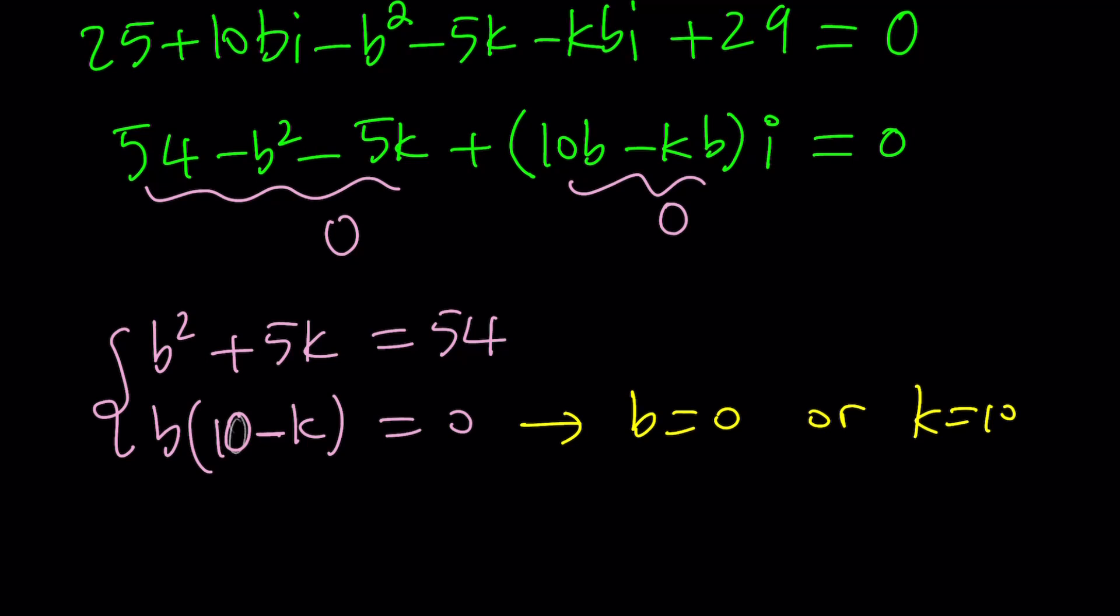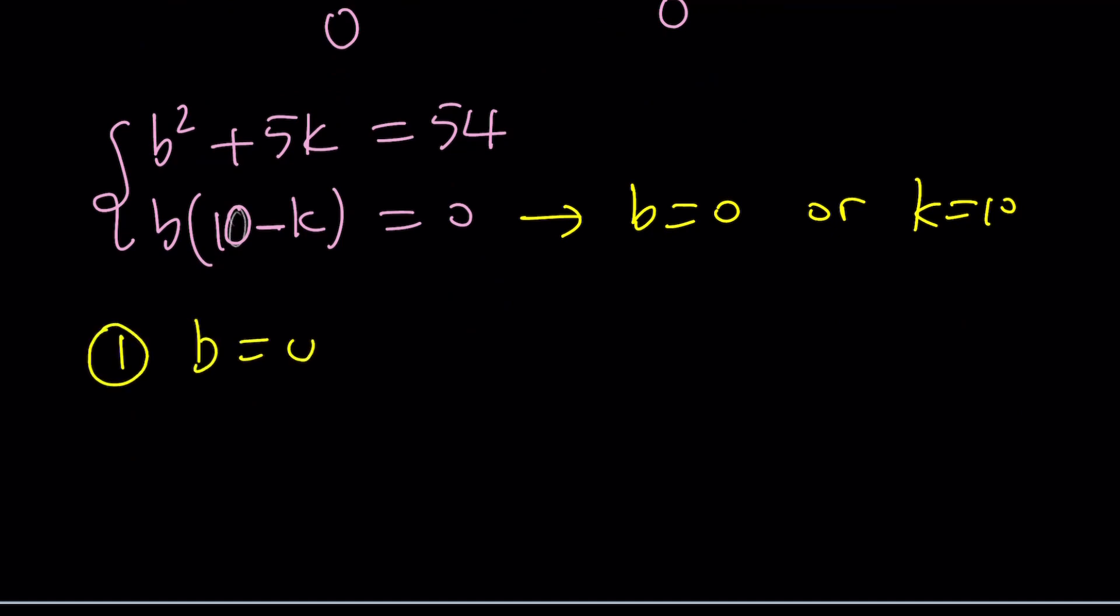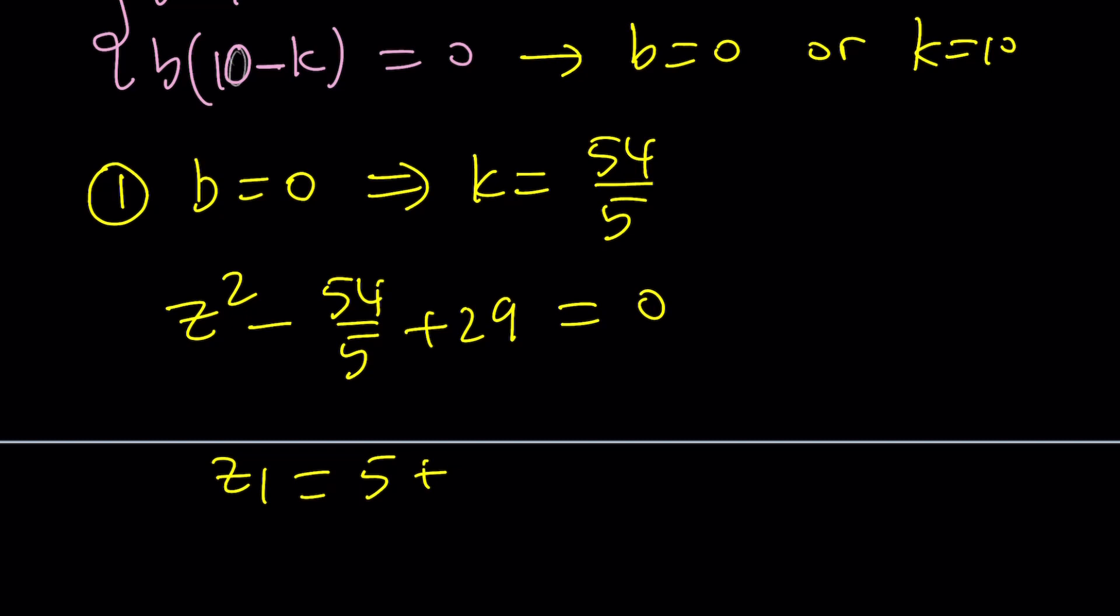We're going to look at each case and let's go ahead and start with b equals 0. If b is equal to 0, then from here by substitution from the first equation, we get k equals 54 over 5. So let's go ahead and take a look at this result. If I plug in the k value, we get z squared minus 54 over 5 plus 29 equals 0. And z sub 1 is equal to 5 plus bi.